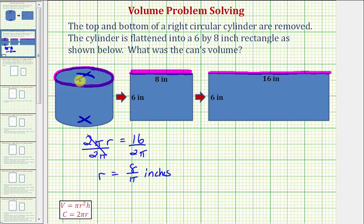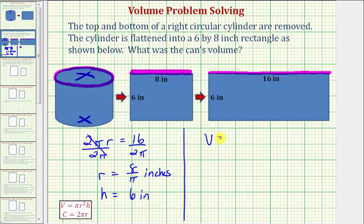Now that we know the radius of the right circular cylinder, we also know the height would have to be six inches, and we can determine the volume using the formula: volume equals pi r squared times h. The height h is the length of this side here, which is six inches. Therefore, the volume is going to be equal to pi times r squared — leaving r in exact form as eight divided by pi — squared, times the height of six inches.